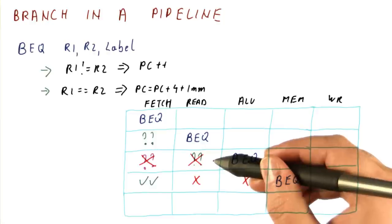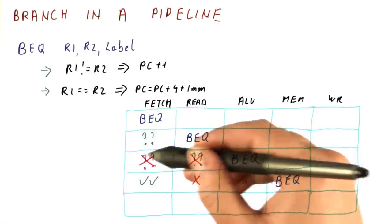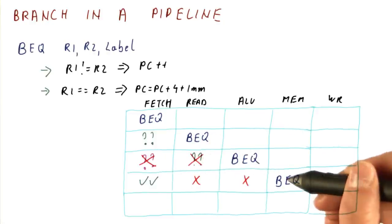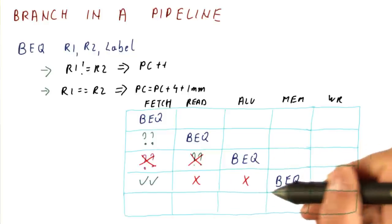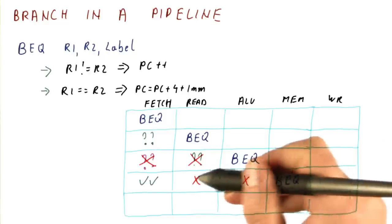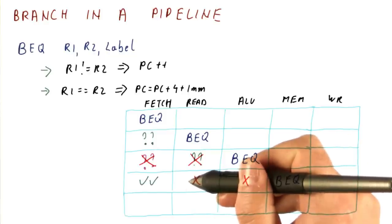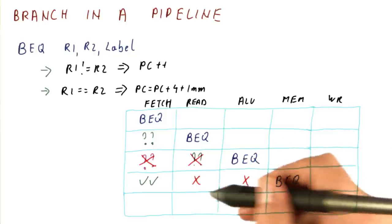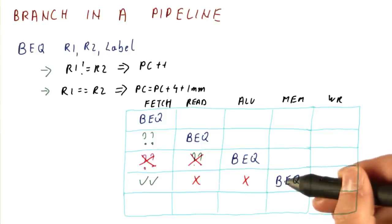However, if we mispredicted what will happen during the branch, and we fetch the wrong things, then the branch effectively took three cycles to execute. Because the branch actually finishes in one cycle, but then there are two empty cycles when we don't finish anything. So overall, the cost of the branch was really three cycles instead of one in our pipeline.